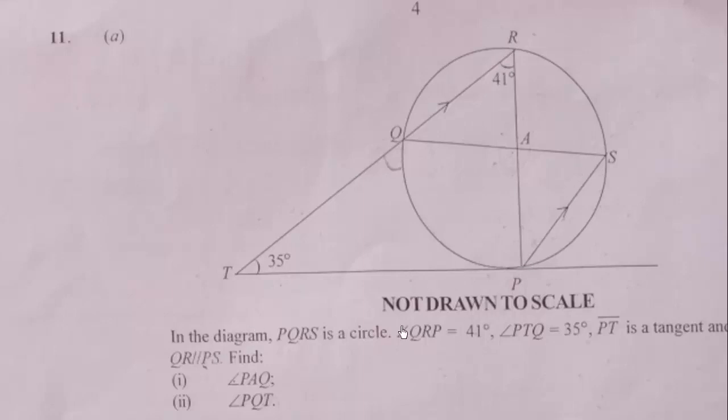We have to find angle PAQ and angle PQT. Let's begin using the parallel lines. We know that this angle, which is angle RPS, will also be equal to 41 degrees because it's an alternate angle, so they are equal.